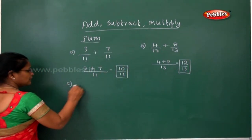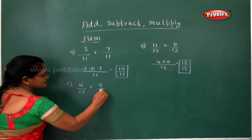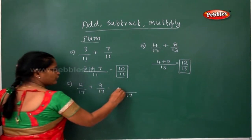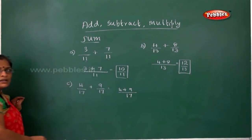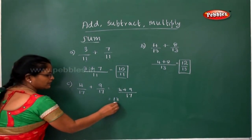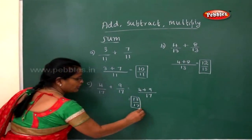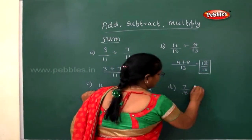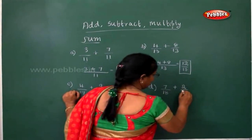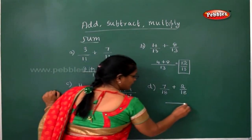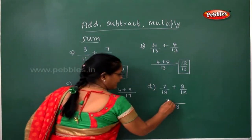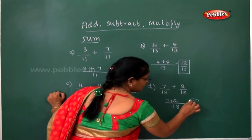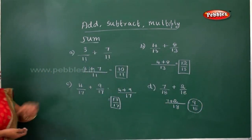Next sum: 4/17 plus 9/17 — write the common denominator 17, and 4 plus 9 equals 13, so the answer is 13/17. Next: 7/18 plus 2/18 — take the common denominator 18, then add the numerators: 7 plus 2 equals 9, so the answer is 9/18. This is how you find the sum of fractions.